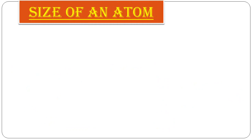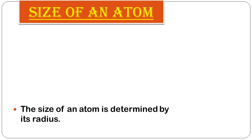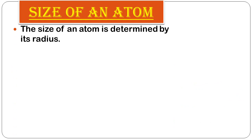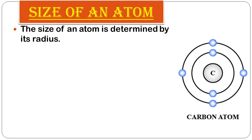Now we will see what is the size of an atom. The size of an atom is determined by its radius. Here is the structure of a carbon atom: there is a positively charged nucleus at the center, with two shells — the K shell and the L shell. The K shell has two electrons and the last shell has four electrons, giving carbon a total of six electrons.